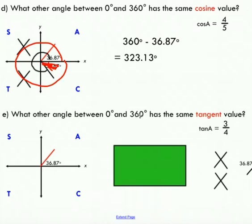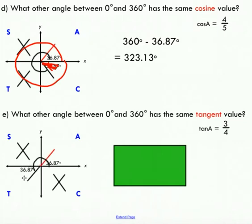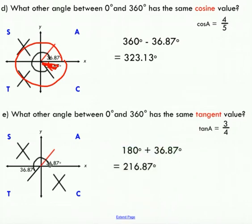What other angle between 0 and 360 degrees has the same tangent value? We know tan of A is 3 over 4, which is a positive number, so we cannot have an angle in the S quadrant or the C quadrant. If we rotate our terminal arm a little further, we end up in the third quadrant — the tan quadrant — where tan is positive. We know that a straight line is 180 degrees, and we want to go 36.87 degrees more, so we add 180 and 36.87, giving us 216.87 degrees. These two angles are related — they have the same tan value.